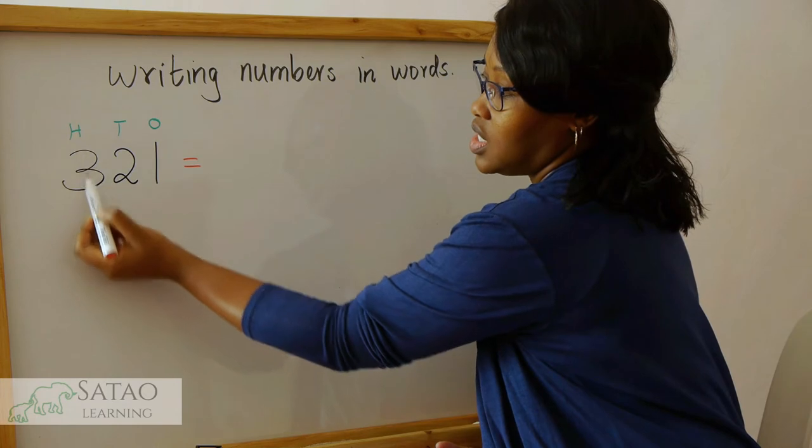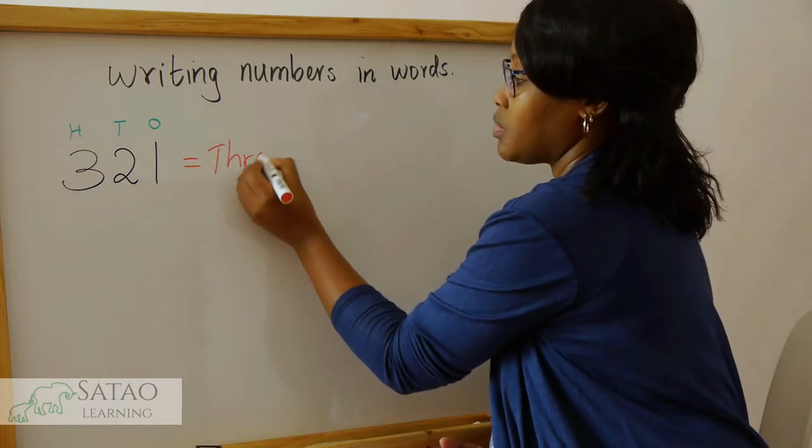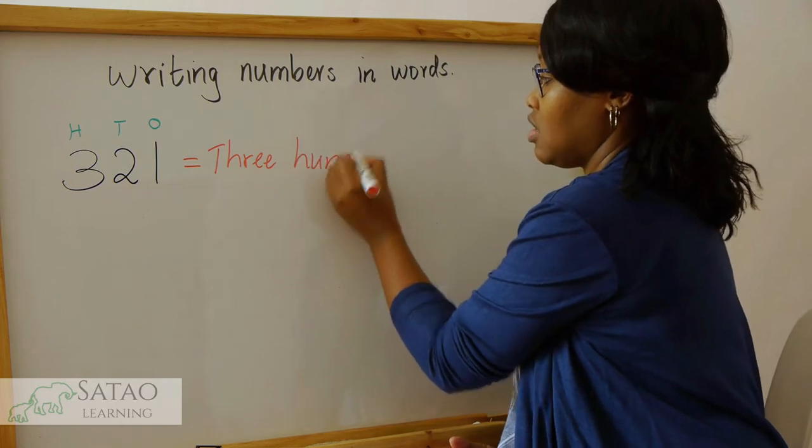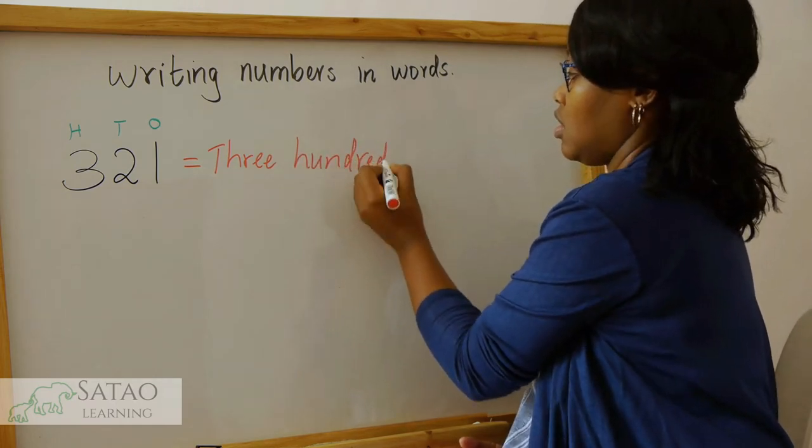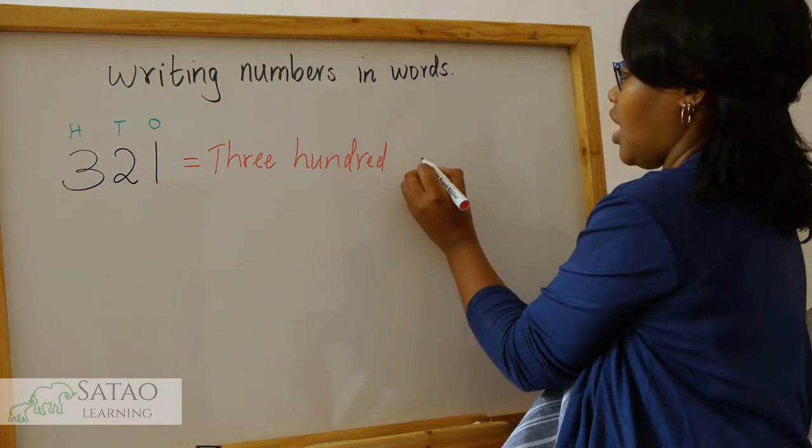300 sits in the hundreds place, so it's 300. Then the last two numbers, we read them together.